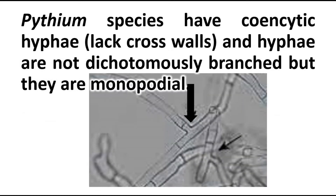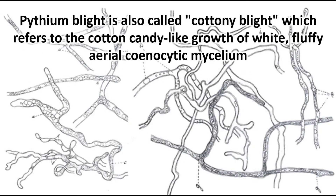Pythium species have coenocytic hyphae and they are not dichotomously branched. As you can see in this picture, I am marking it with an arrow. It shows monopodial branching, not dichotomous branching. Pythium blight is a disease caused by the fungus which is characterized by a cottony blight appearance. You can see the blight appearance whenever the infection is present. You can see the diagram showing the details of the mycelia of Pythium with monopodial branching.